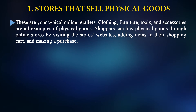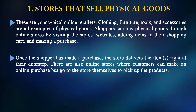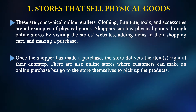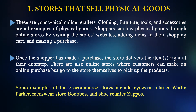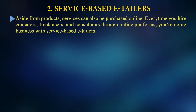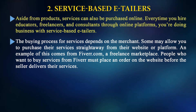Stores that sell physical goods are your typical online retailers — clothing, furniture, tools, and accessories. Shoppers can buy physical goods through online stores by visiting websites, adding items to a shopping cart, and making a purchase. Once purchased, the store delivers the item right at their doorstep. There are also online stores where customers can make an online purchase but go to the store themselves to pick up the product. Examples include eyewear retailer Warby Parker, menswear retailers, and shoe retailers like Zappos or Red Tape in India. For service-based e-tailers, every time you hire educators, freelancers, and consultants through online platforms, you are doing business with service-based e-tailers. The buying process depends on the merchant — some allow you to purchase services straight away from their website.